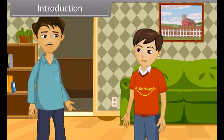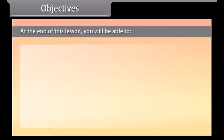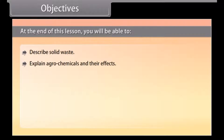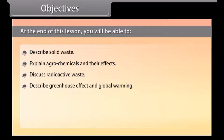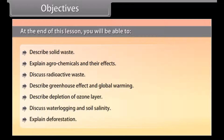In this lesson, you will learn about environmental issues. At the end of this lesson, you will be able to describe solid waste, explain agrochemicals and their effects, discuss radioactive waste, describe greenhouse effect and global warming, describe depletion of ozone layer, discuss waterlogging and soil salinity, and explain deforestation.